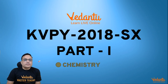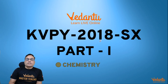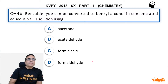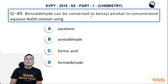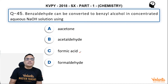Hello guys, this is Vinay Pandey. Let us solve KVPY 2018 SX Part 1 Chemistry question number 45. The question says: benzaldehyde can be converted to benzyl alcohol in concentrated aqueous NaOH solution using (a) acetone, (b) acetaldehyde, (c) formic acid, or (d) formaldehyde.